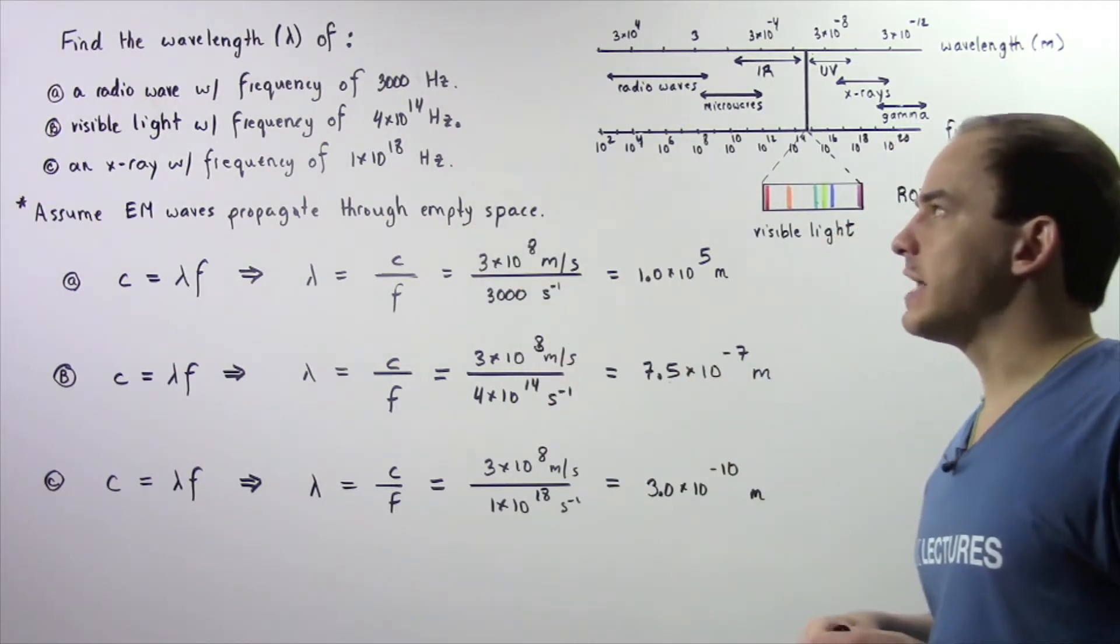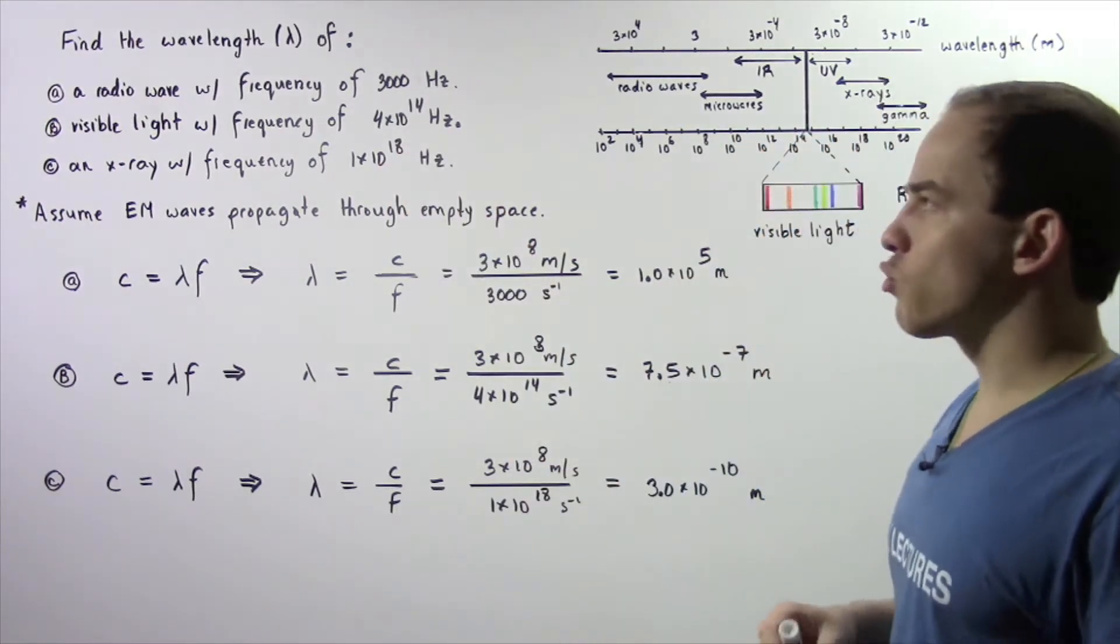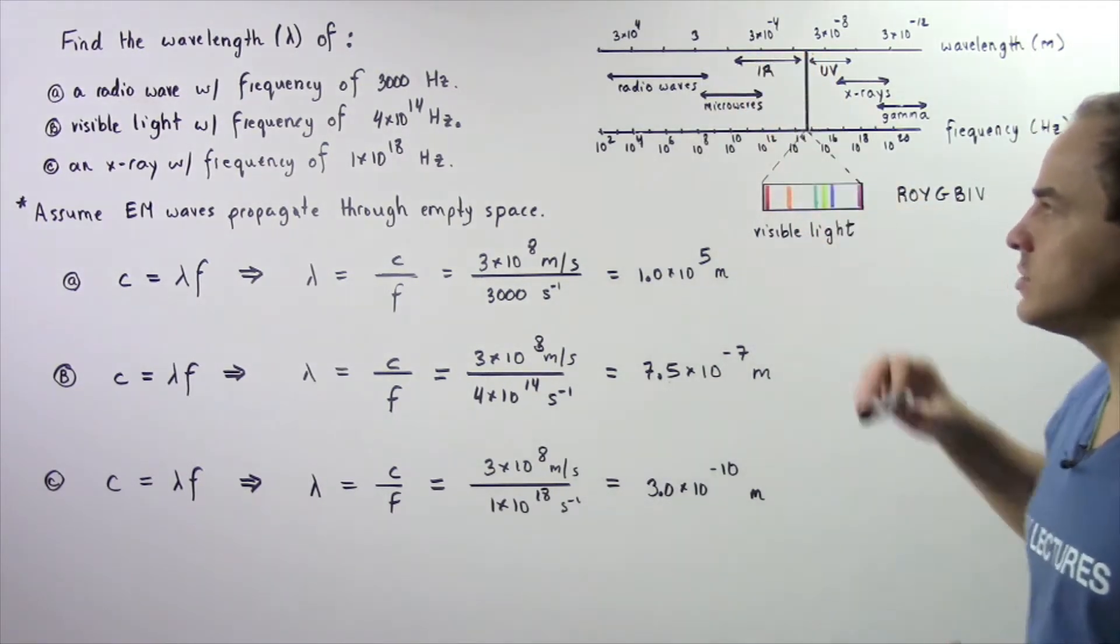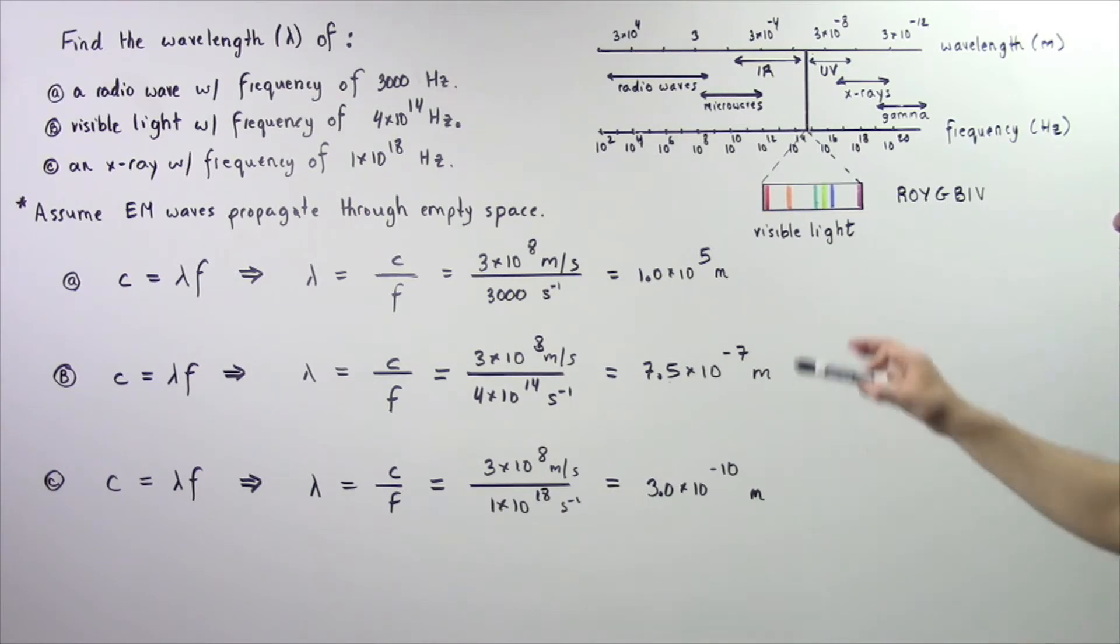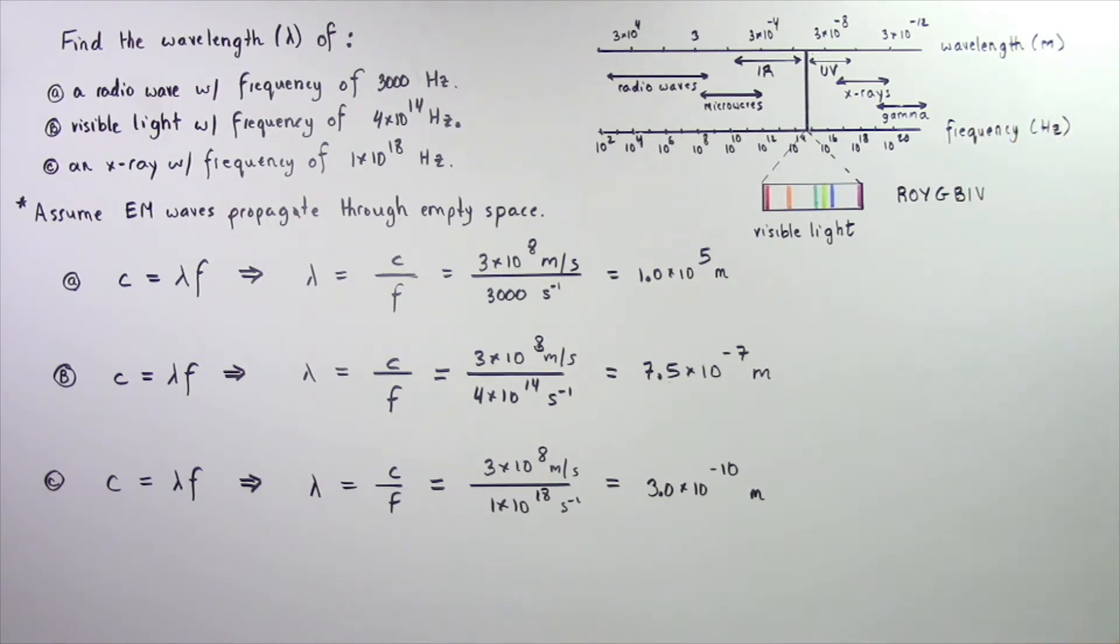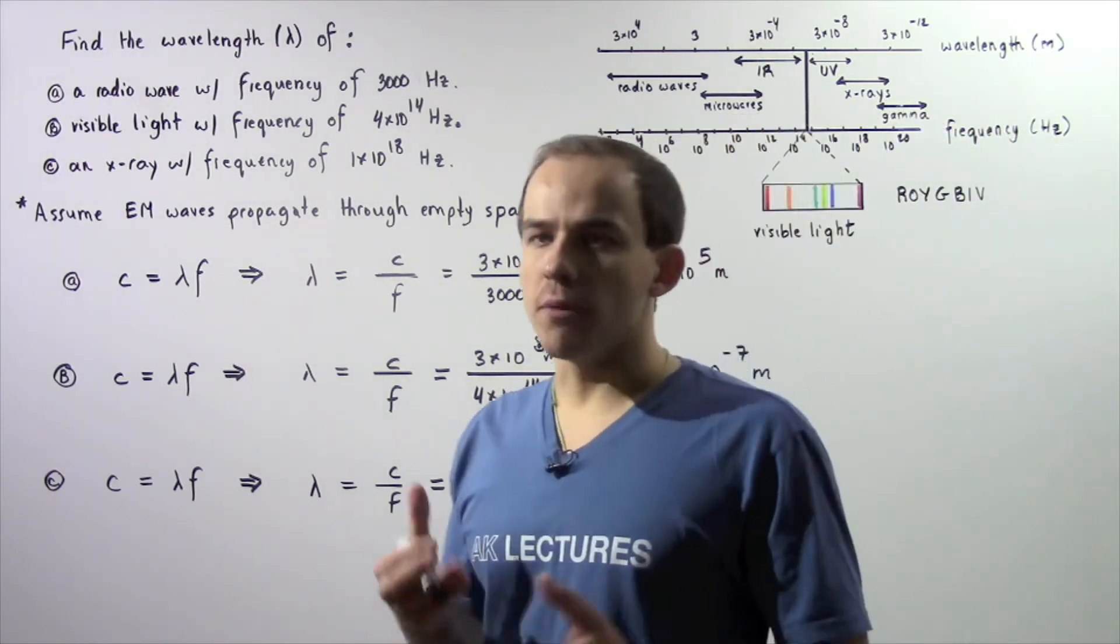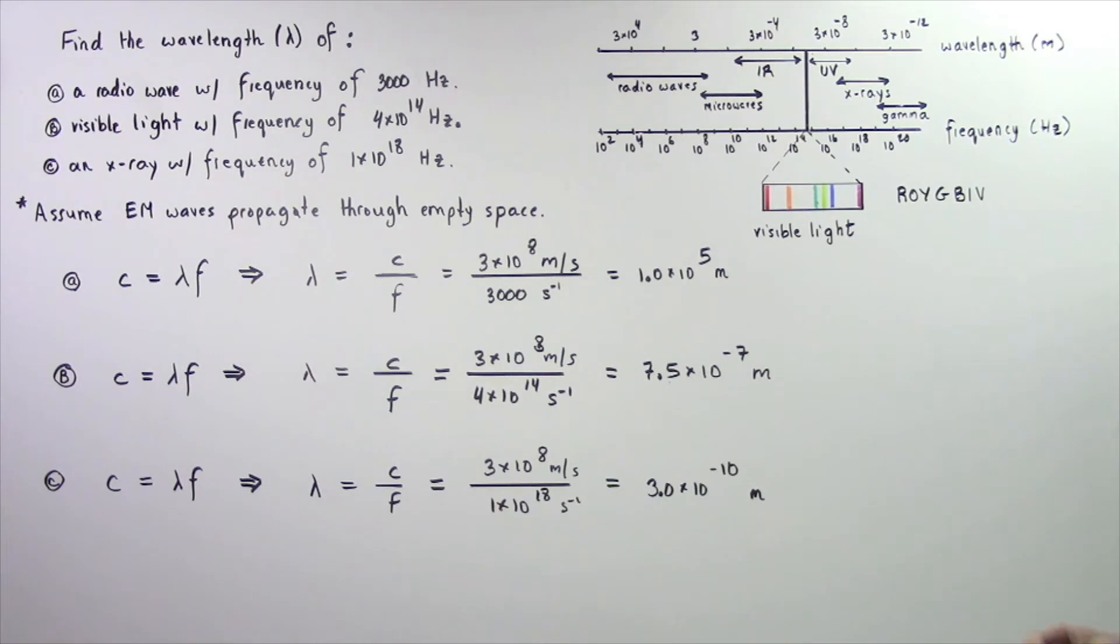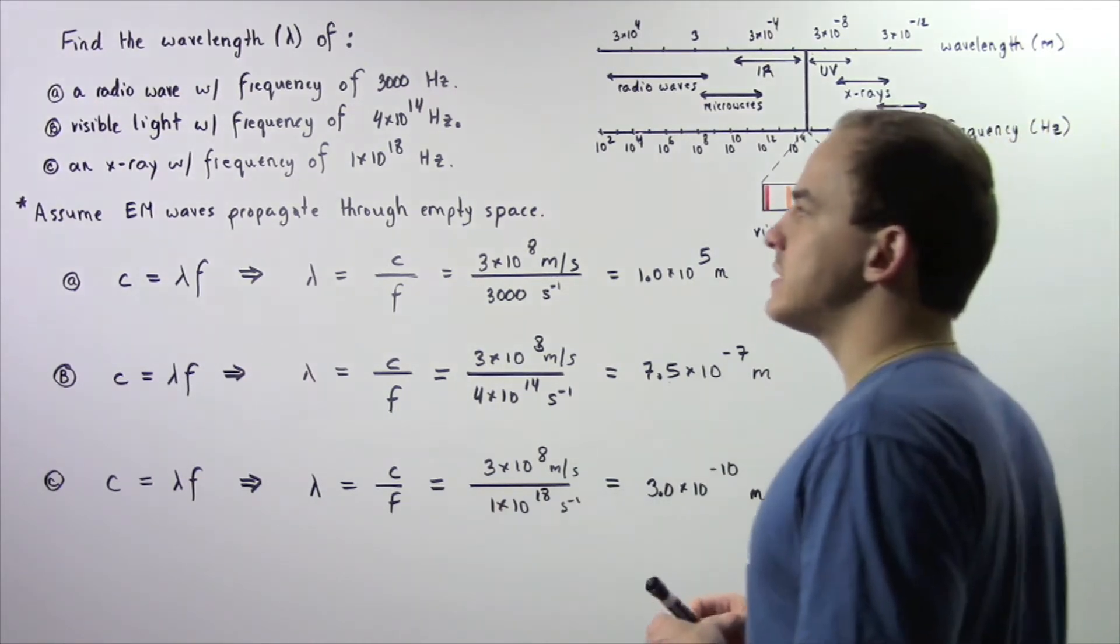Find the wavelength, given by lambda, of a radio wave with a frequency of 3000 Hz, visible light with a frequency of 4 times 10 to the 14 Hz, and an X-ray electromagnetic wave with a frequency of 1 times 10 to the 18 Hz. We're assuming that the electromagnetic waves are propagating through empty space, that means the velocity, the speed, is 3 times 10 to the 8 m per second.